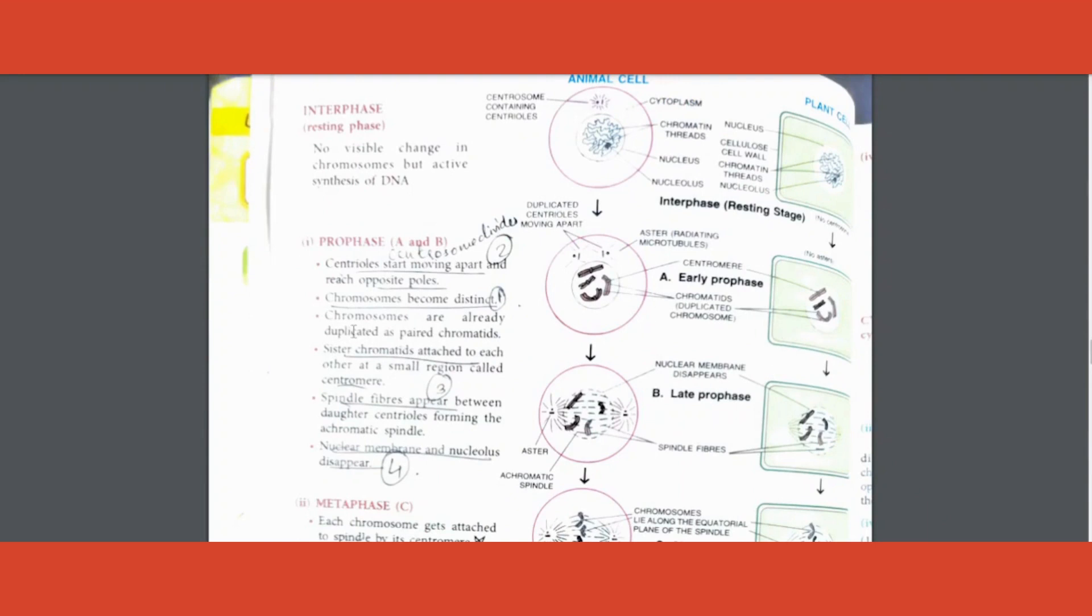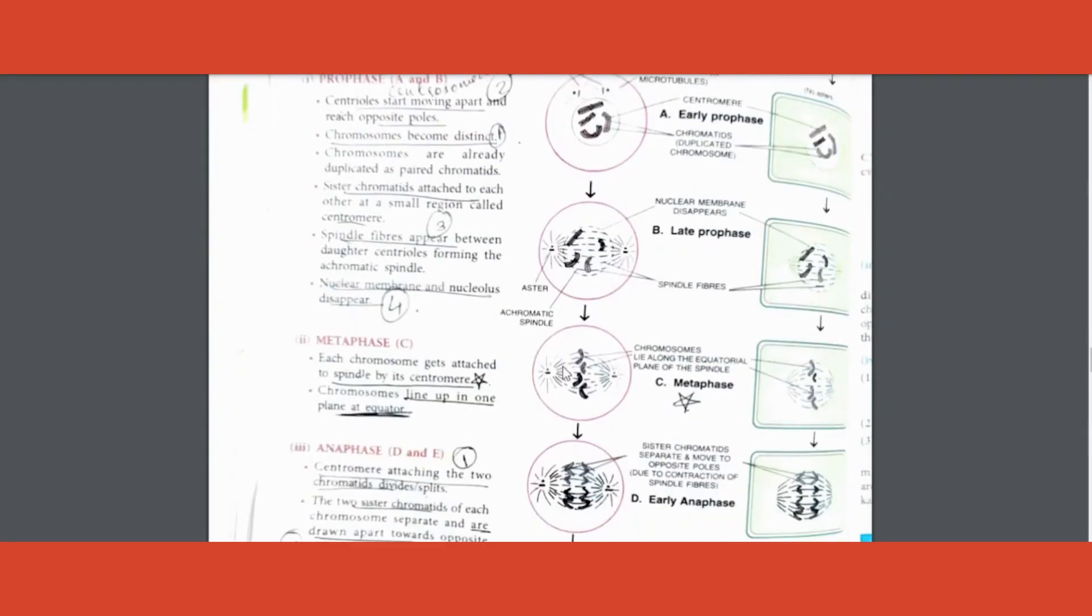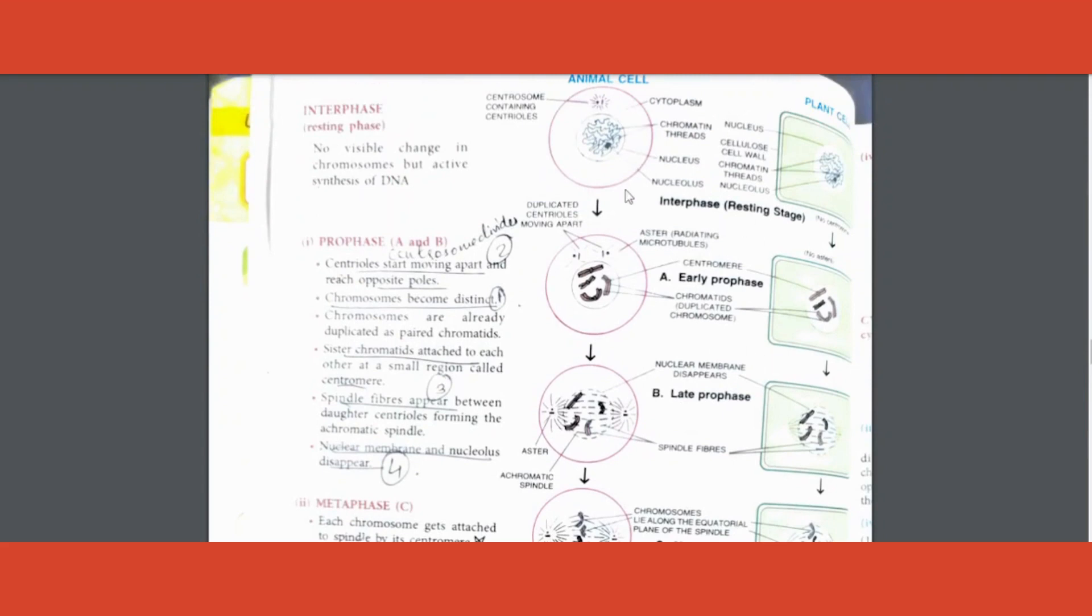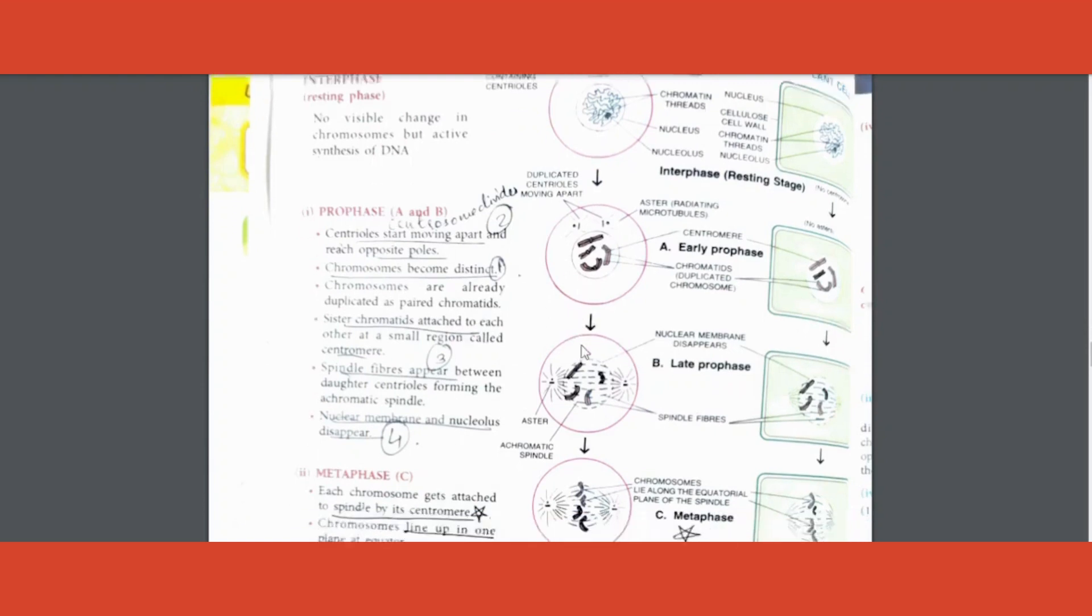Coming to the division - prophase, metaphase, anaphase and telophase - there is a picture given in your textbook with comparison between animal and plant. I have marked certain points for you. Write this in both cases, don't worry. Only one difference you will make in case of plant cell is the mentioning of centrosome should not be there because in plant cell the centrosome which forms the centriole are absent, asters are also absent. These points you will omit, otherwise you can write the same points.